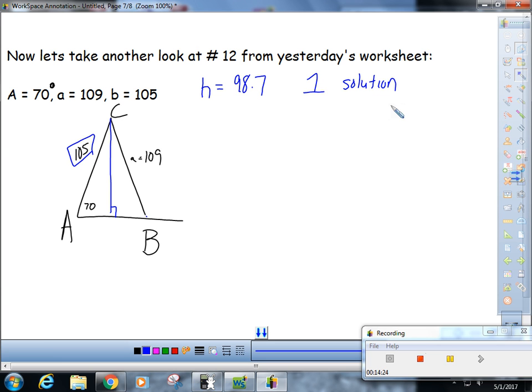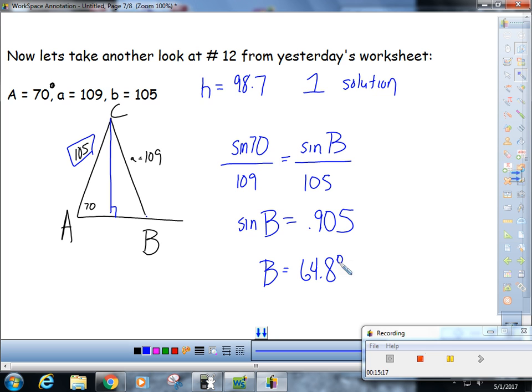We would find big B first. Sine of 70 is to 109, like sine of big B is to 105. So sine of B is equal to cross multiply and divide: 105 times the sine of 70 divided by 109. Sine of B is 0.905. Get rid of that by second invert, or second sine, and you get big B is 64.8 degrees.